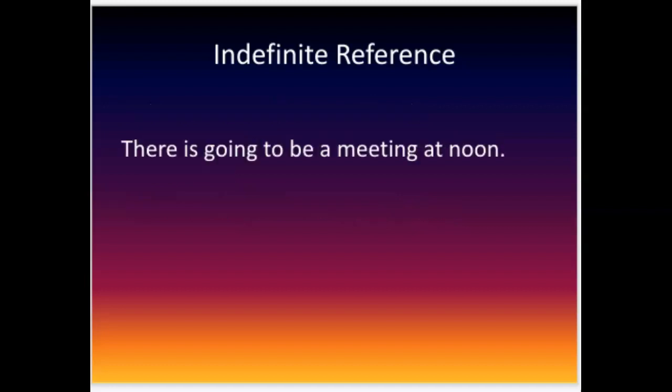For example: 'There's going to be a meeting at noon.' You have the word 'there,' which can be a direct pronoun — like 'I want you to go over there' — but in this case it's not referring to anything. It's indefinite what it means. So to fix it, you need to rewrite your sentence. It would be something like: 'A meeting is at noon.' It simplifies it and eliminates the extra words.